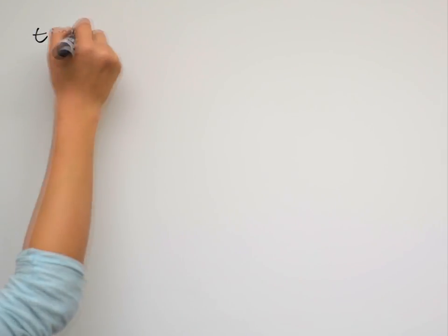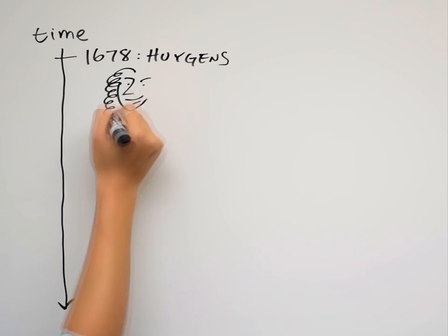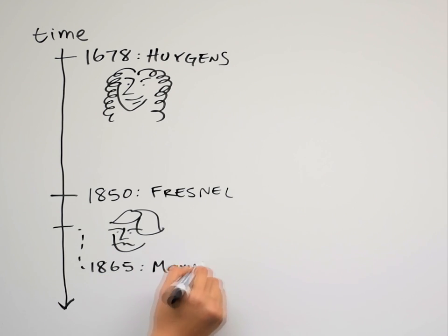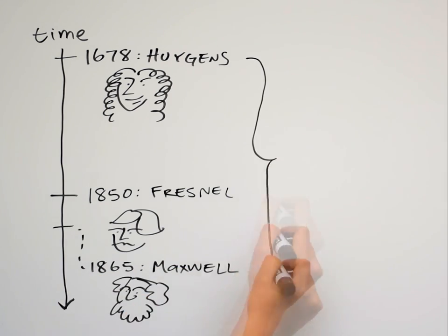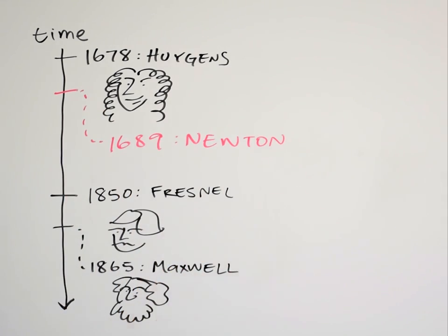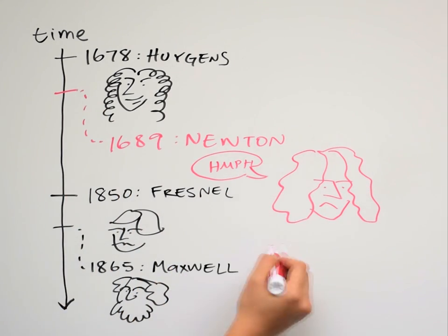Up until the discovery of quantum mechanics in the 20th century, the nature of light was hotly debated. A long history of eminent scientists proved light behaved like a wave with interference and diffraction, but Isaac Newton firmly believed that light was a particle.